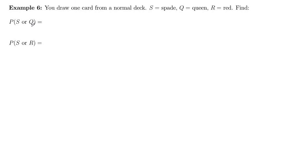Let's look at another example of the addition rule. We are going to draw one card from a well-shuffled normal deck. S is the event it's a spade, Q a queen, and R the event that it's red.